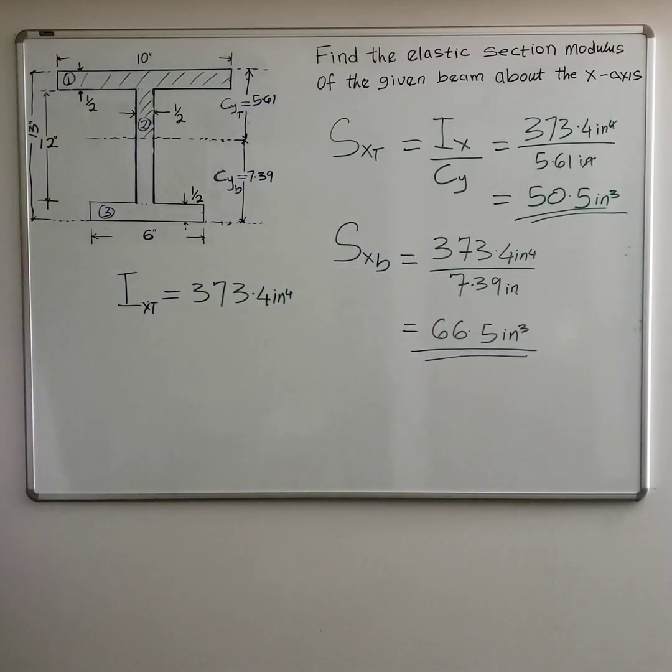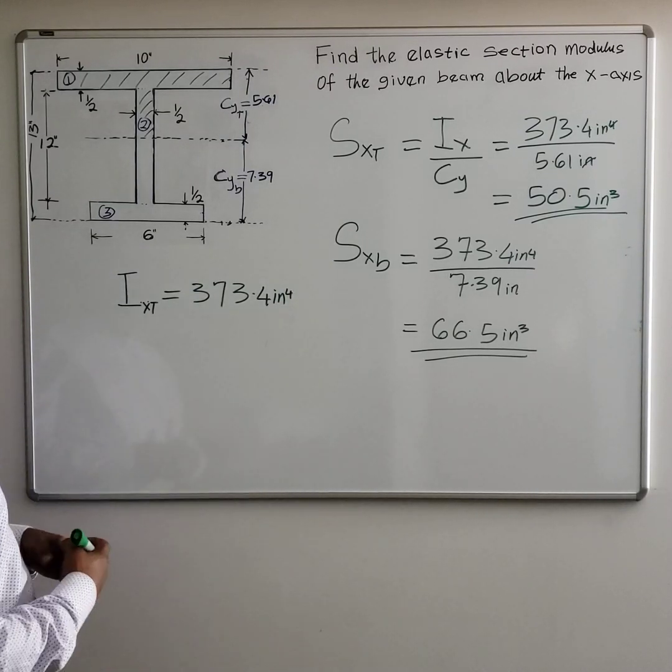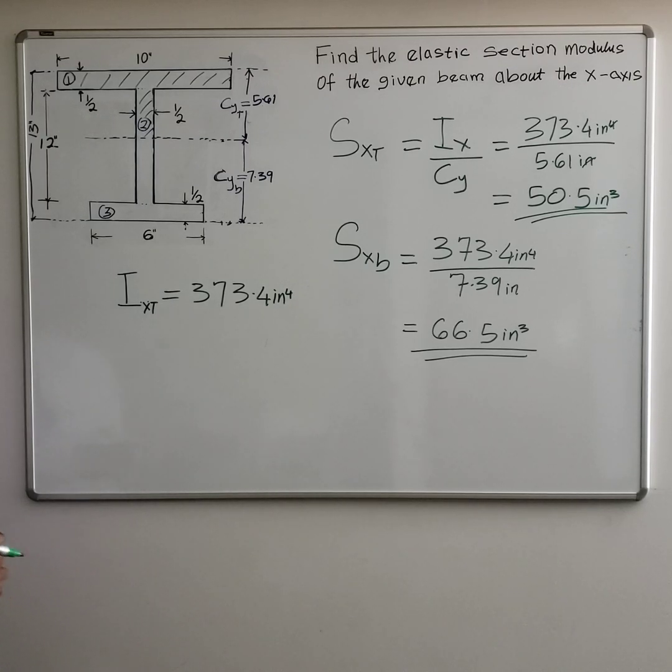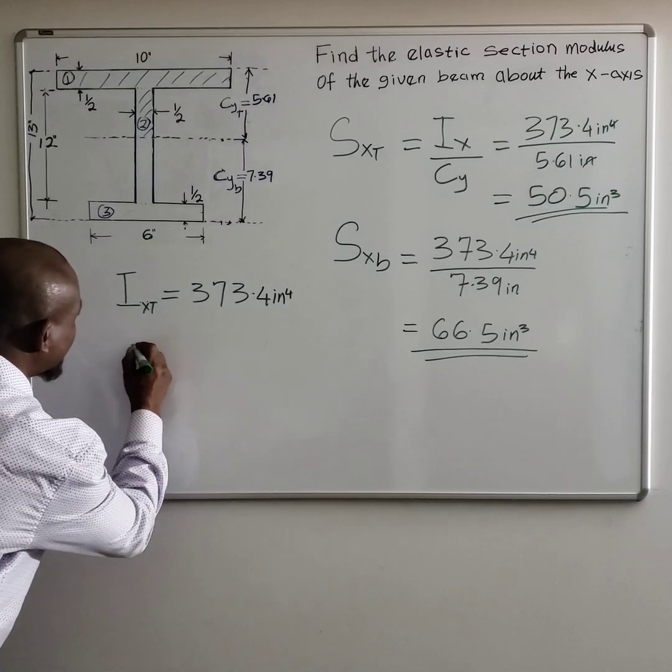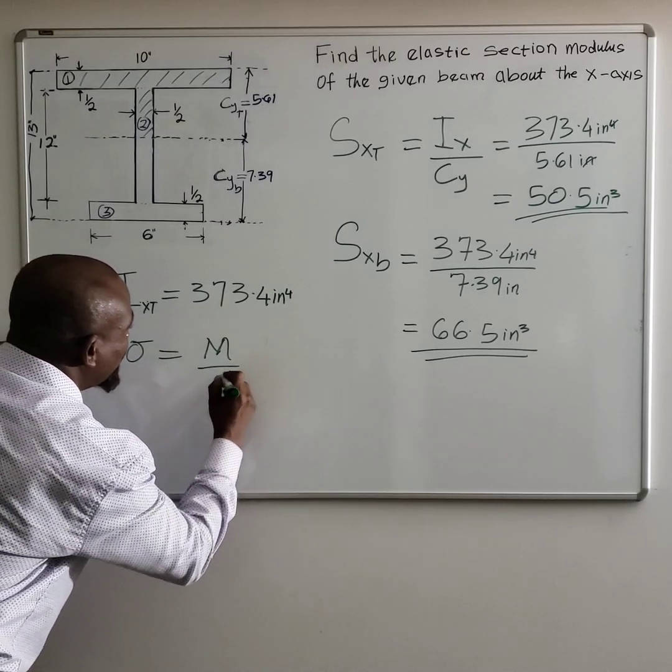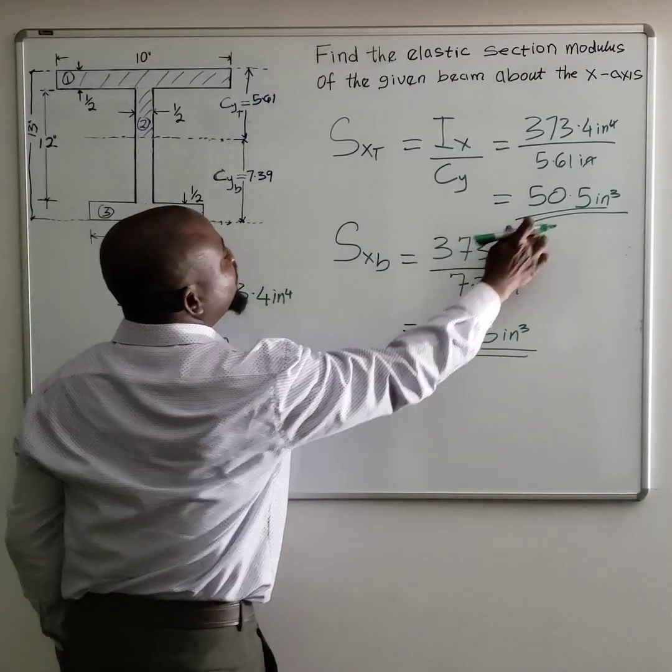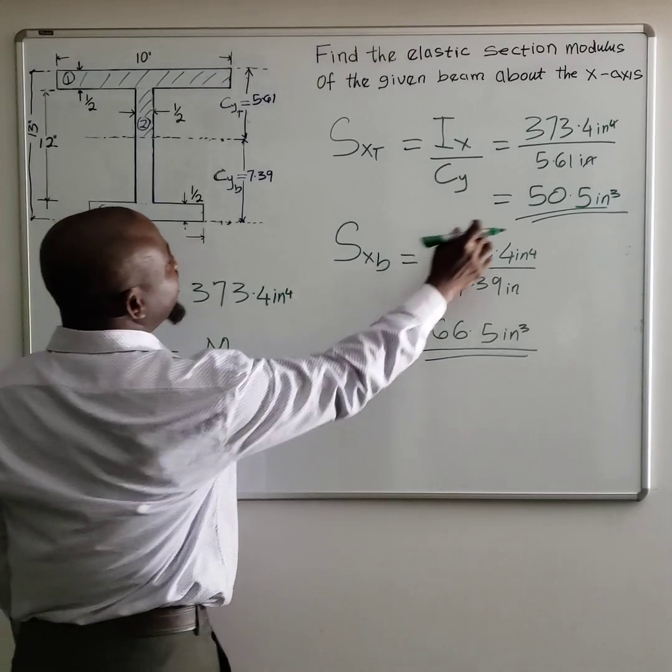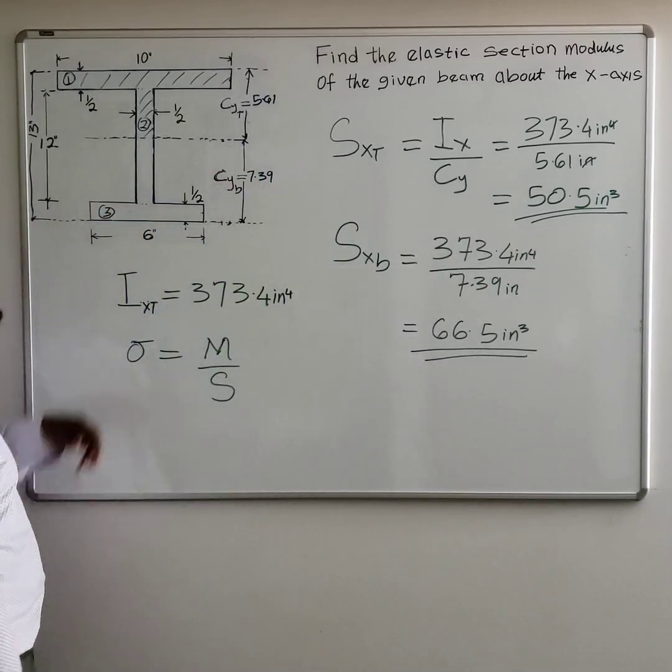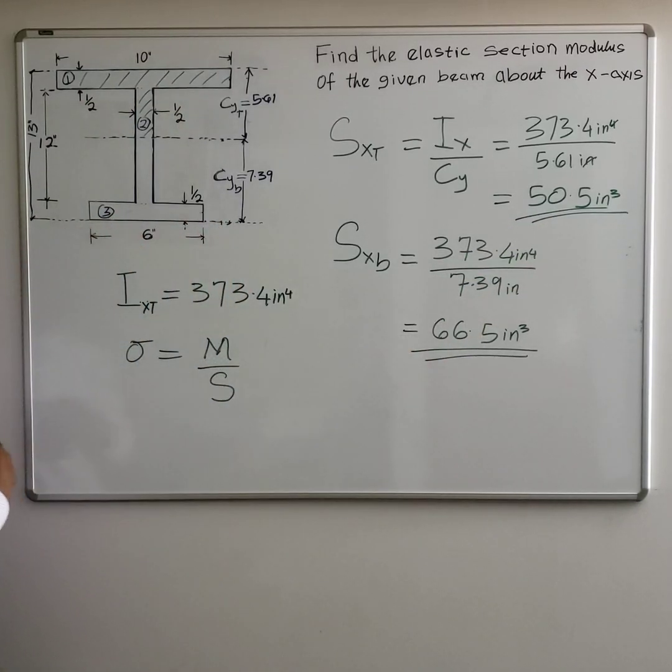So that's it, that's the solution. Check this number out. So in a situation where you are asked to find the maximum stress, if you are asked to calculate the maximum stress, you realize that maximum stress is given as M over S. So you will notice that the lowest value will give you the maximum. So that means the maximum for this beam will be on the top, because that's where you have the lowest section modulus.